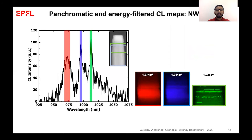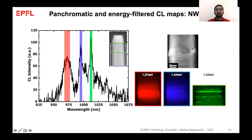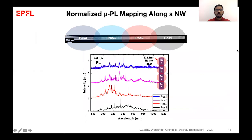Looking at another nanowire, we again see that the radial clusters are optically active and not the axial ones, with multiple emission peaks present. Here, the indium-rich clusters are accumulating in stacking faults on the nanowire sidewalls and in kinks, which is also confirmed by the HAADF image shown. When we look at the photoluminescence spectra, taking a scan along the nanowire length at different positions, we see multiple sharp emission peaks at different positions and wavelengths, indicating that these small clusters are indeed quantum confined.